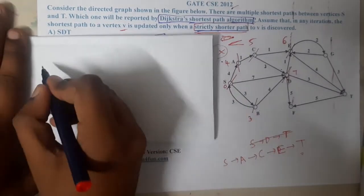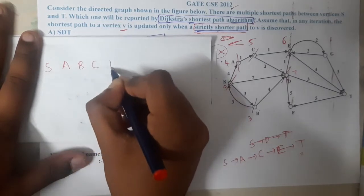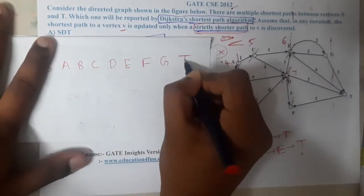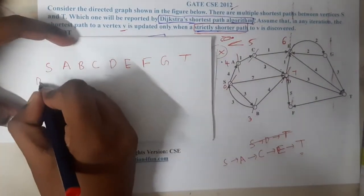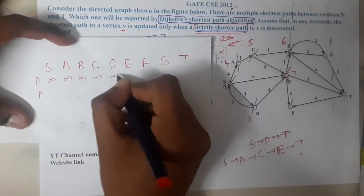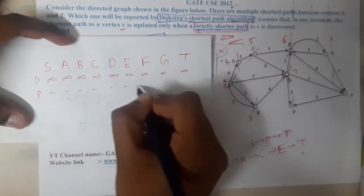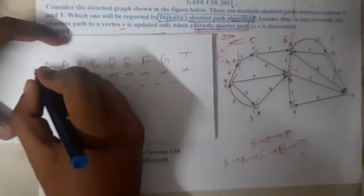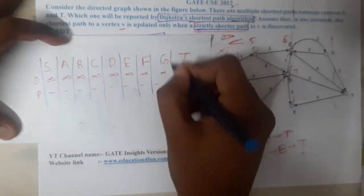We have nodes s, a, b, c, d, e, f, g, and t. We will be tracking distances and parent values. Initially, all distances are set to infinity and all parents are nil. We are going to calculate the shortest path from s to t.